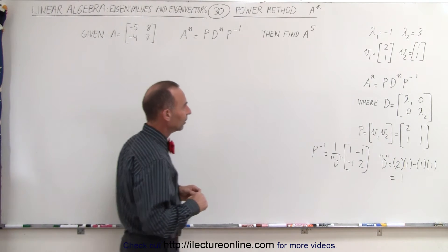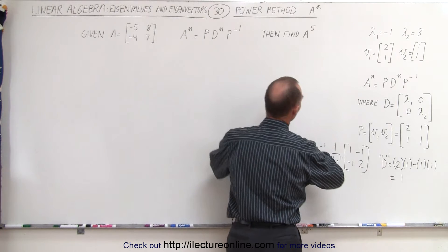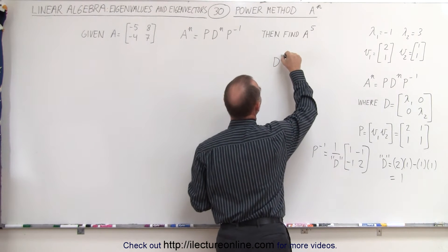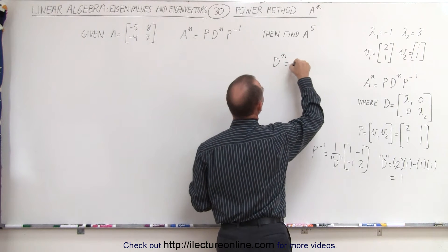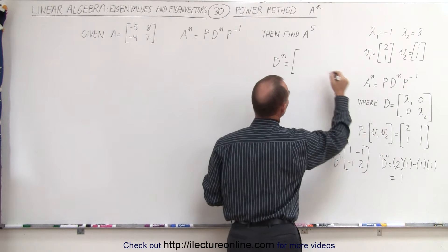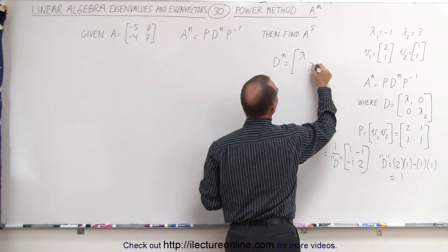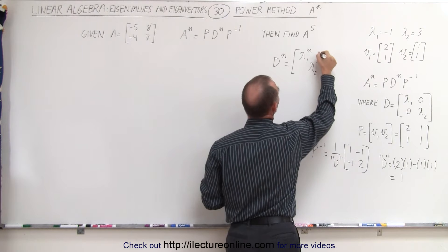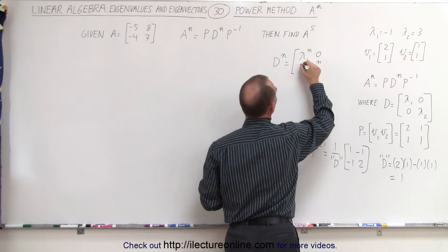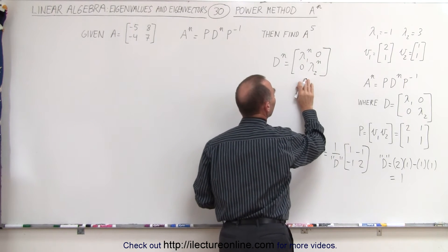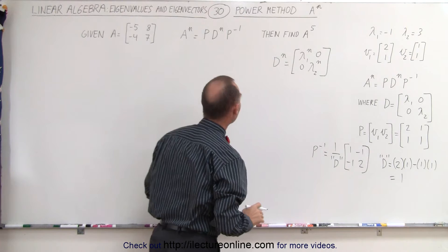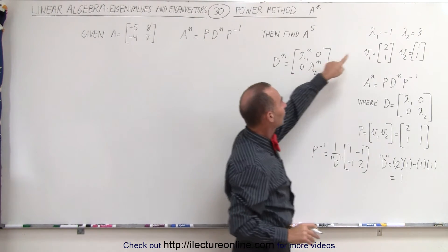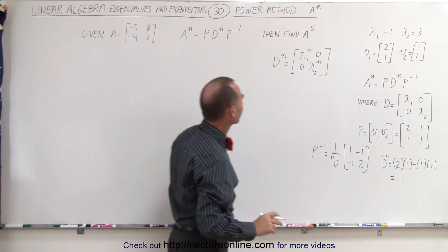In the general sense, D to the nth power is simply equal to the diagonalized matrix with each element raised to the nth power and everything else zero. That's the general case of the diagonalized matrix. In our case, the eigenvalues were given from previous videos.